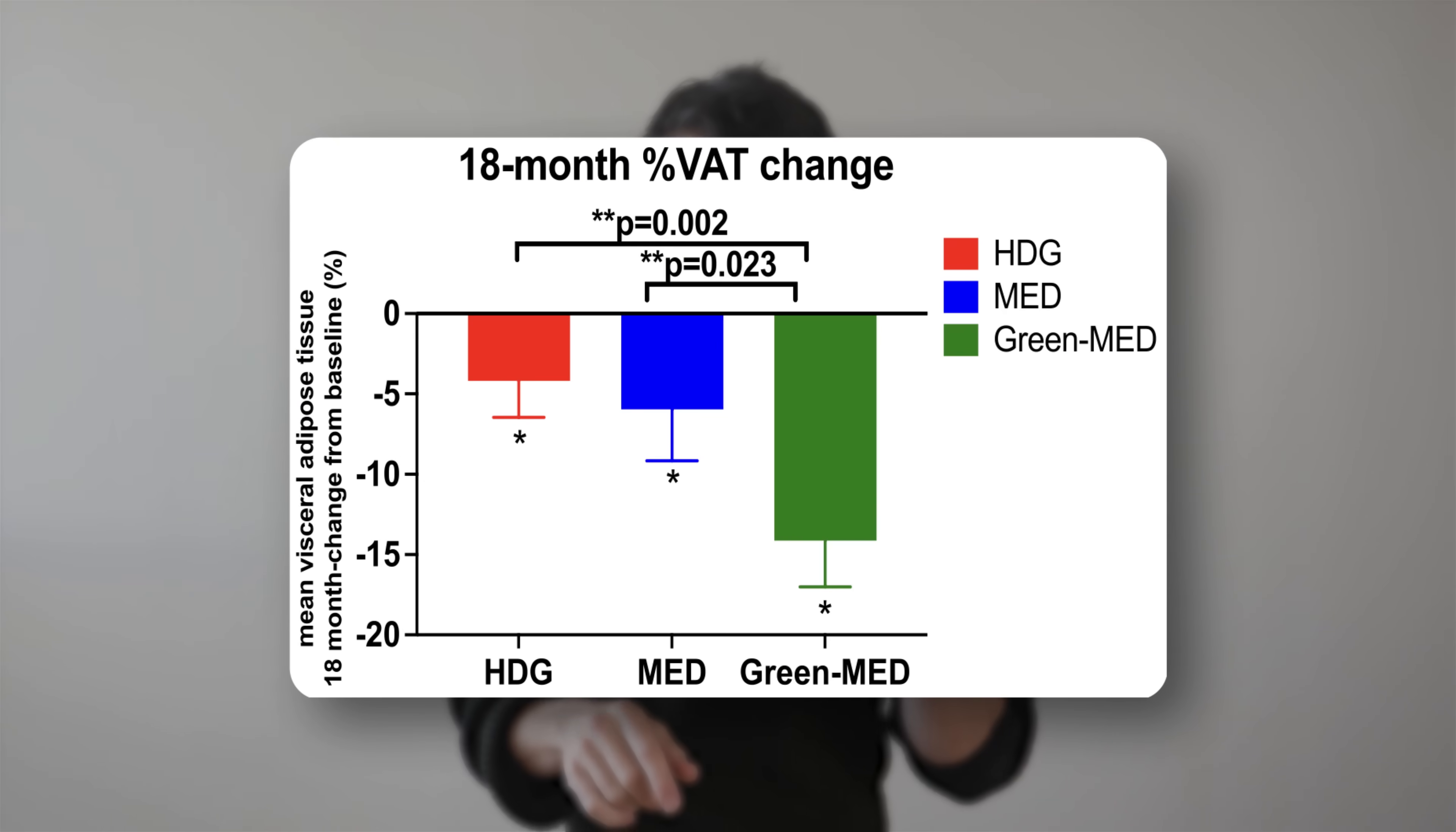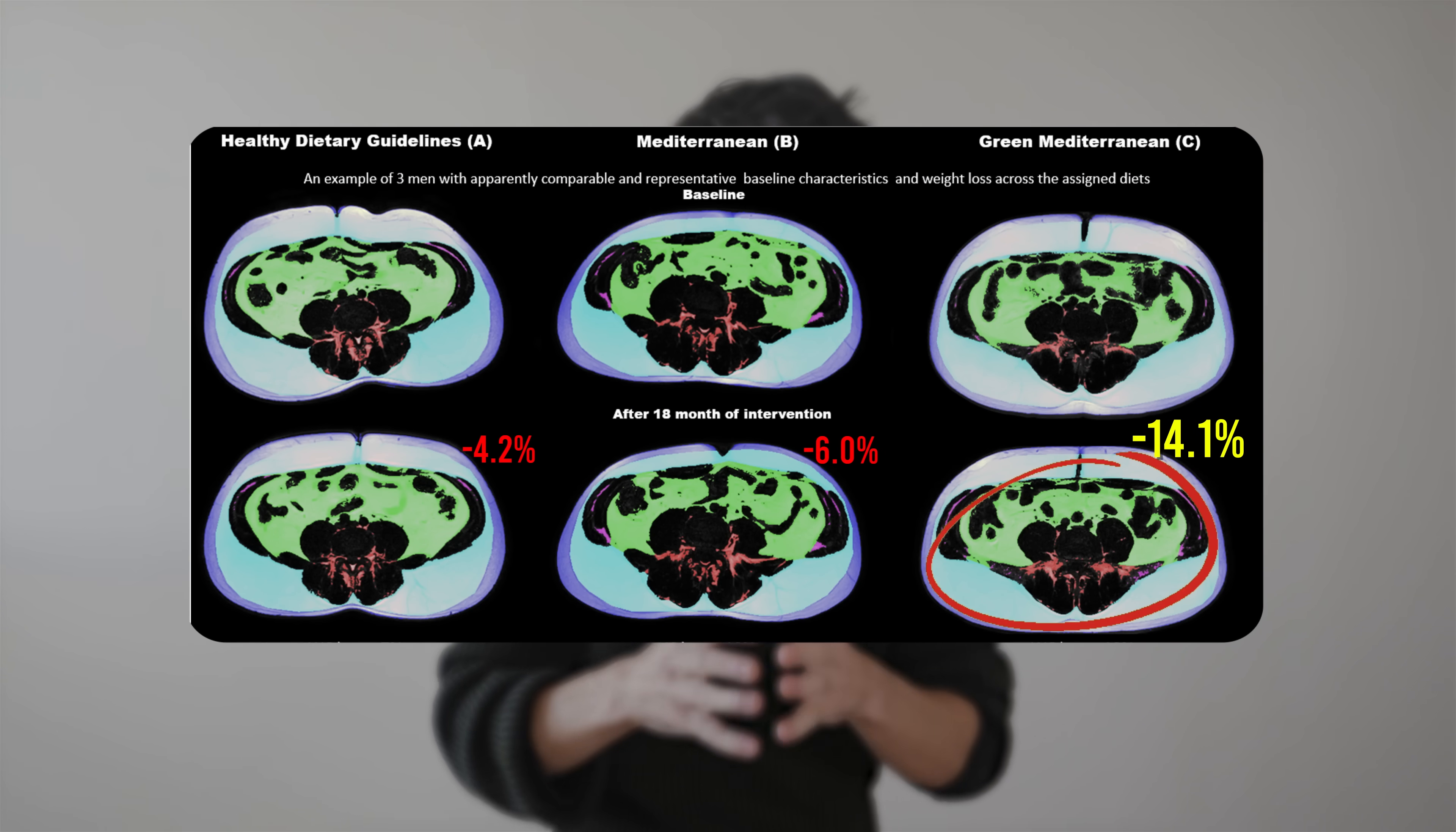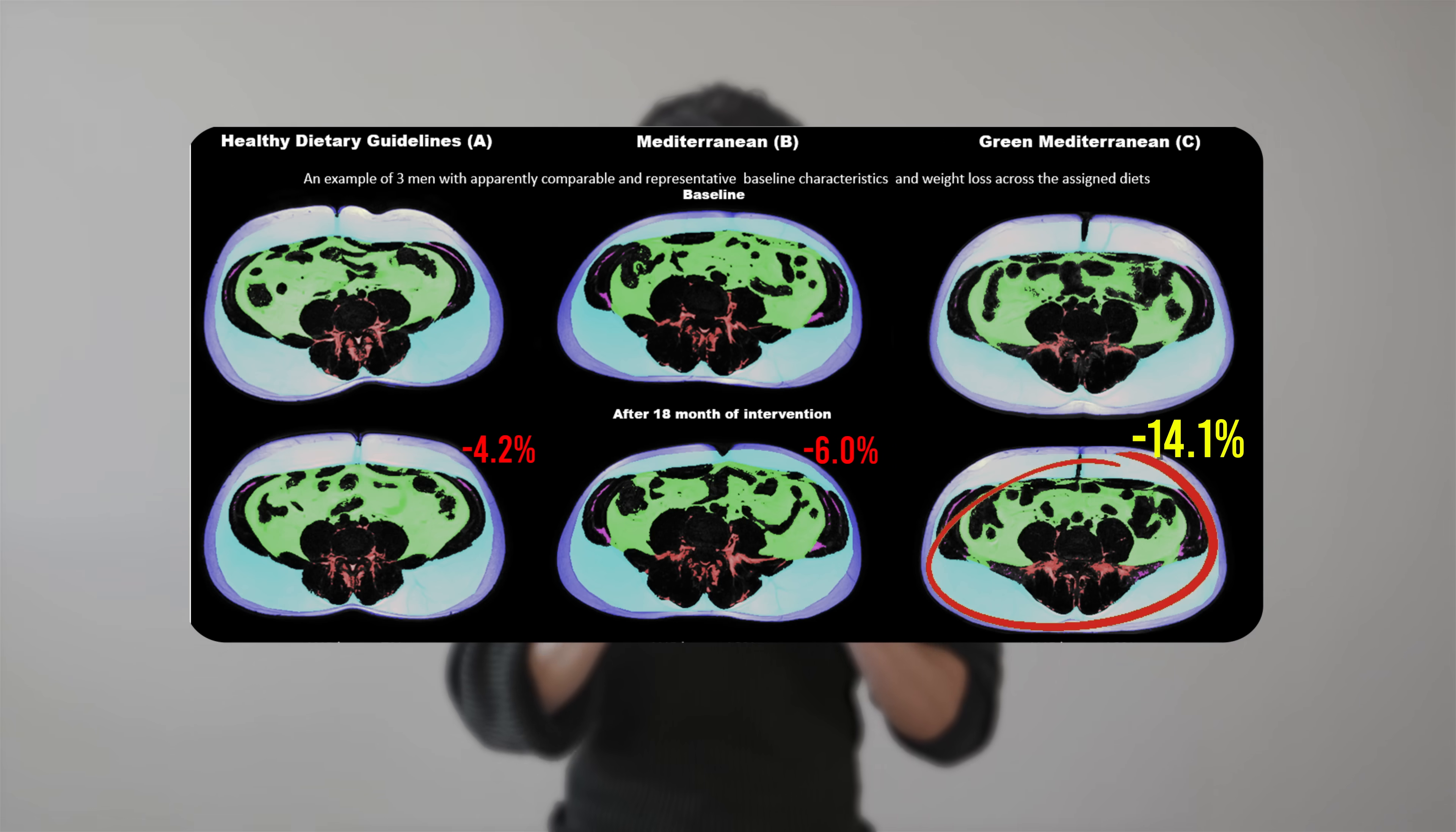Both low-carb Mediterranean diets did outperform the healthy eating control diet. The green med diet with the green tea and the Wolfia globosa generally trended to have an edge in all metrics. But what was most striking was the degree to which the green med diet lost visceral fat.